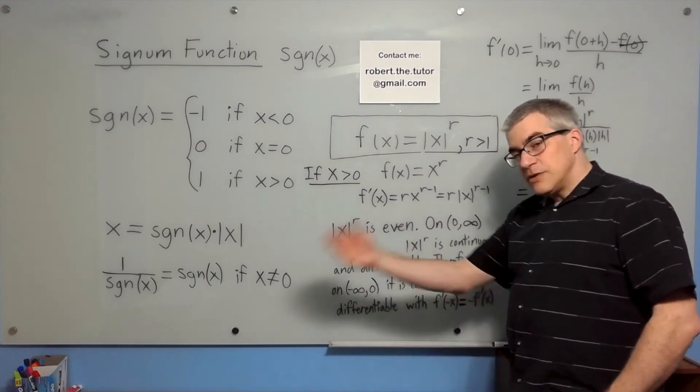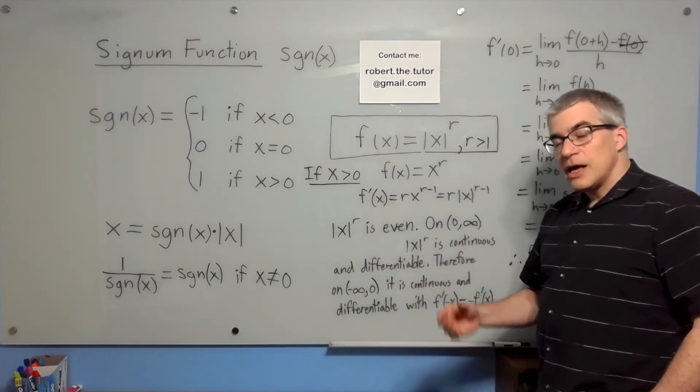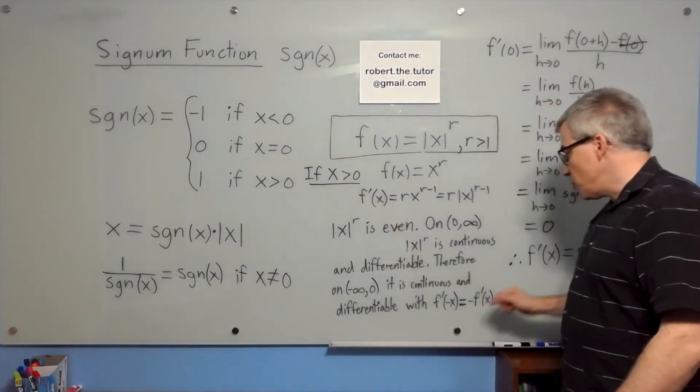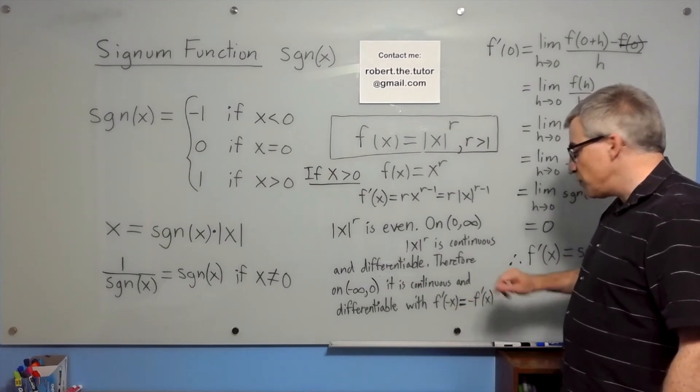Therefore, on negative infinity to zero, it is also continuous and differentiable, and the slope is exactly the negative of the slope on the other side. So f prime of negative x is negative f prime of x.